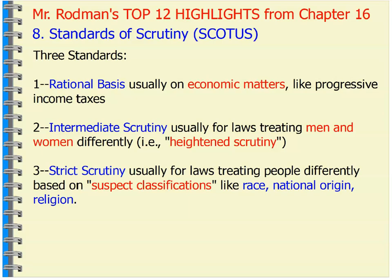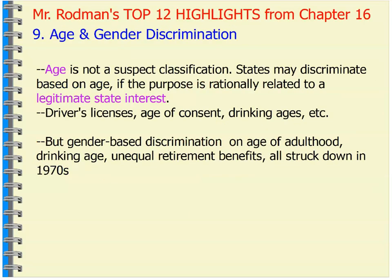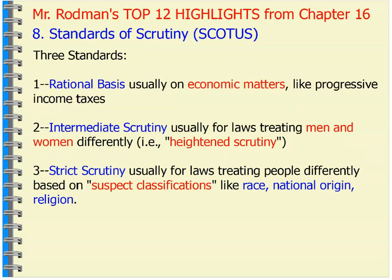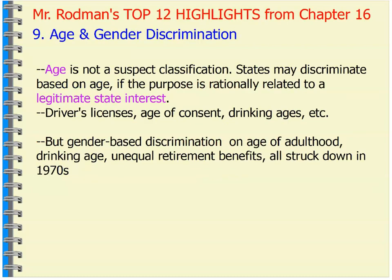Then we get to strict scrutiny, which is a really high standard. It's really going to be hard to prove why you would discriminate based on race, religion, national origin, or ethnicity. The Supreme Court has upheld that this strict scrutiny standard exists for a reason — there's really no reason why you should be able to discriminate based on race. We've also seen age discrimination: driver's licenses, age of consent, drinking age of 21, vaping age raised to 21. Some states require older individuals to take driver's tests more frequently. All of those are suspect classifications, but the Supreme Court has upheld them.